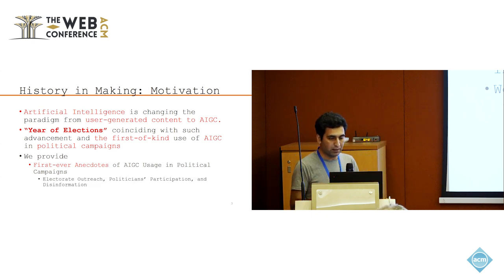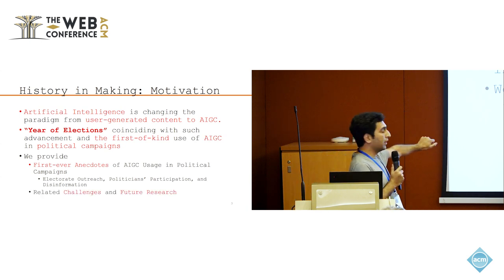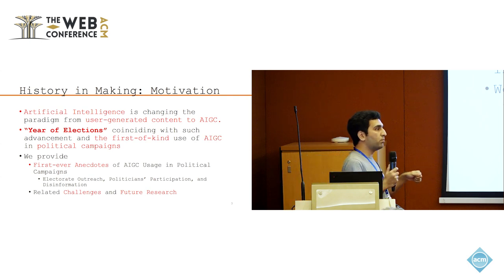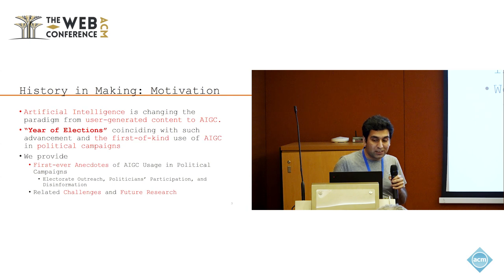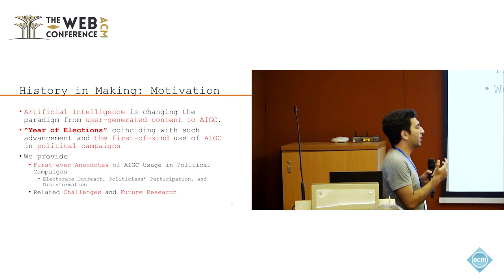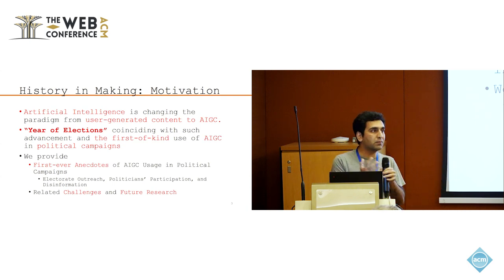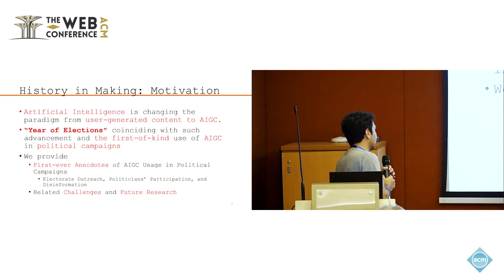This gives us a timely opportunity to see how AI-generated content is being used in these elections and how it will develop in future elections. We provide the first-ever anecdotes of AI-generated content being used in this year's elections, covering three parts: electorate outreach, politician participation in rallies and events, and disinformation.